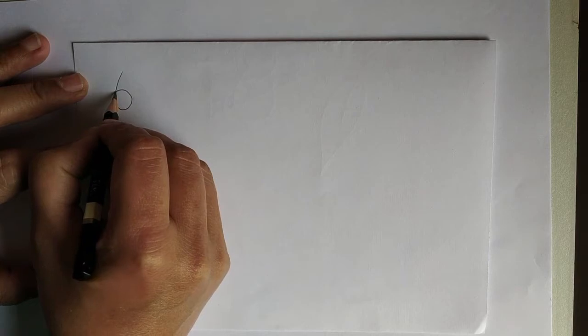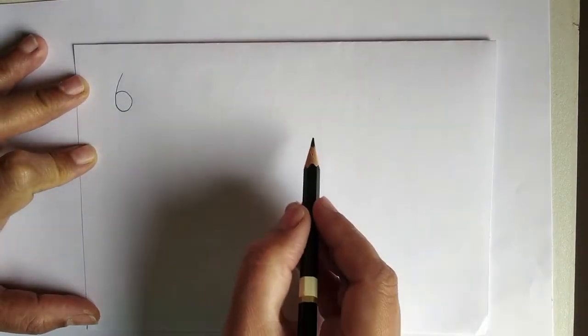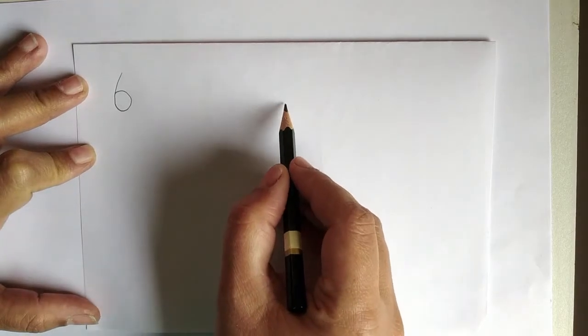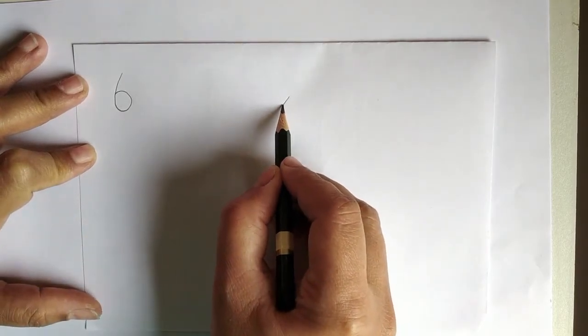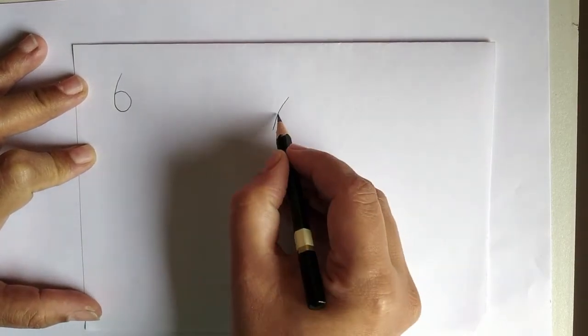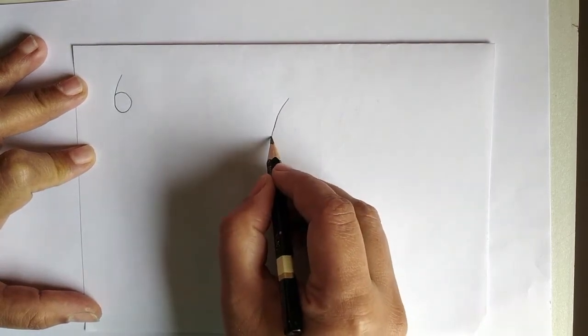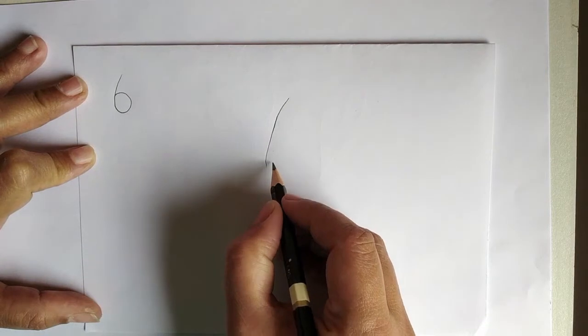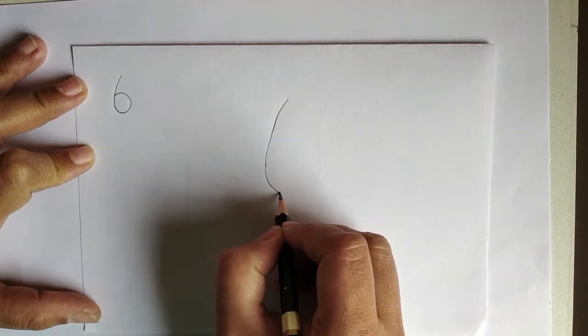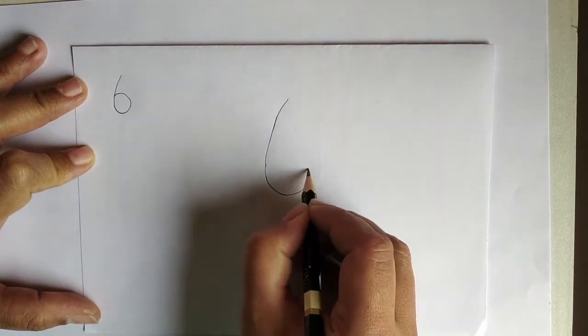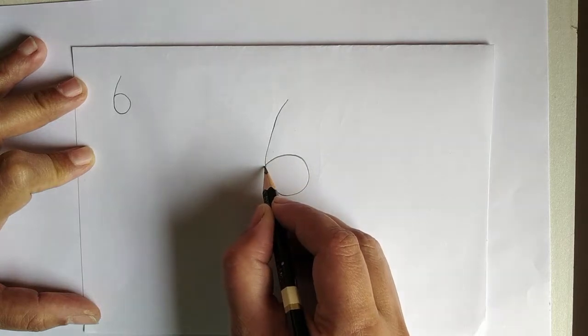Children, now we will start with number 6. Start by making a small semi-circle, and then we go up and join. We have number 6.